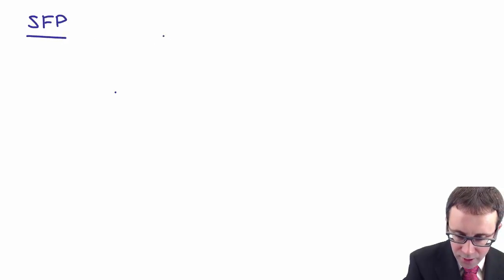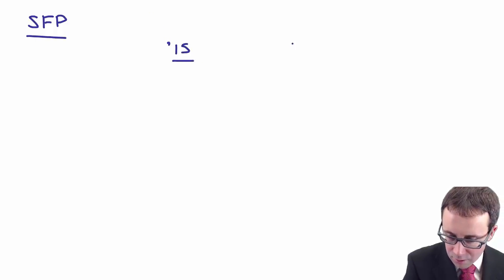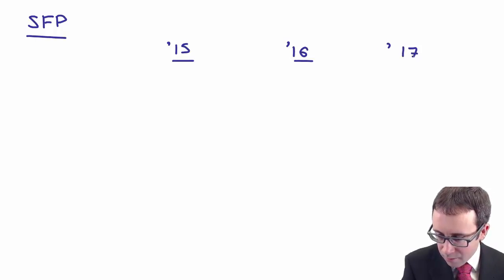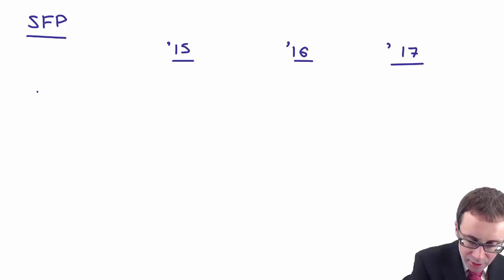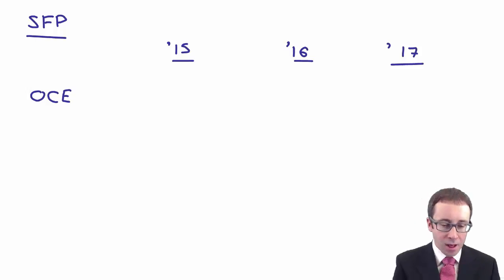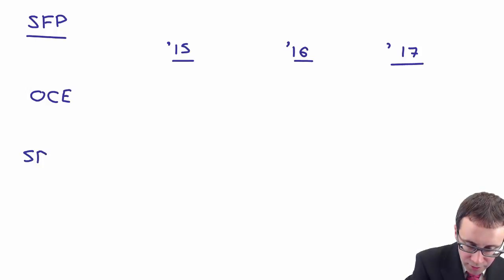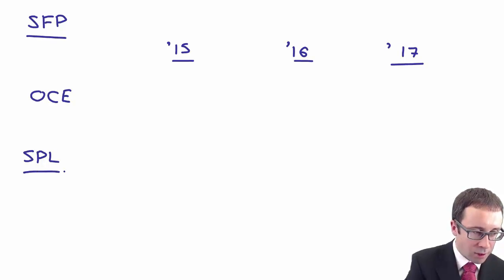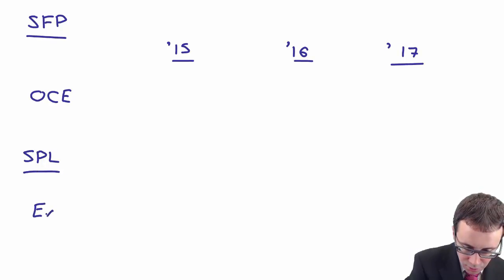Let's draw up the answer. The question wants us to work out extracts from the statement of financial position for years 2015, 2016, and 2017. On the statement of financial position, we have our entry to other components of equity. Within the statement of profit or loss, we have our expense. For each of those, we'll draw up a separate working for the other components of equity figure and the expense figure.